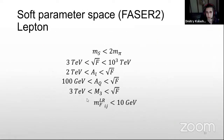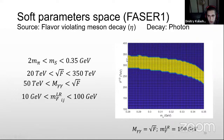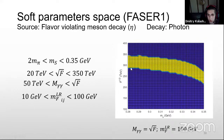There is also a very small area at larger sgoldstino mass — larger than two pion masses — for decays into photons. It is possible to find sgoldstino in a very thin area of soft parameters through flavor-violating meson decays, specifically eta meson decays only. Here I had to take the photino mass as large as possible, so at every point with different F, the photino mass is taken at its maximum.